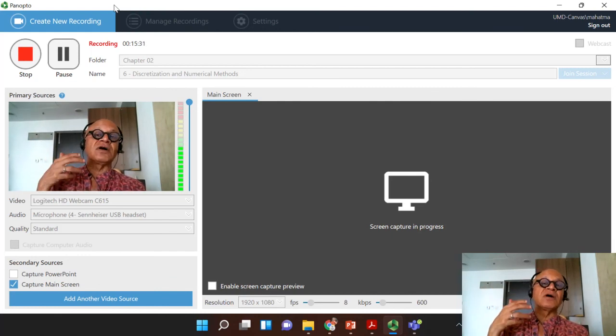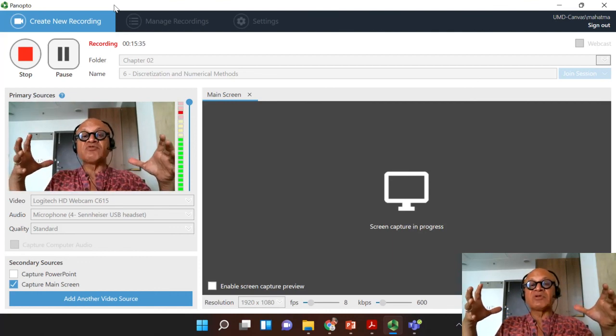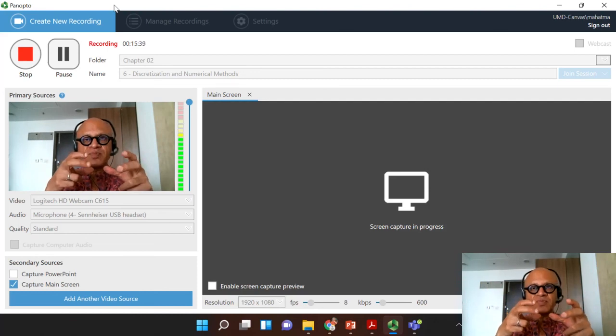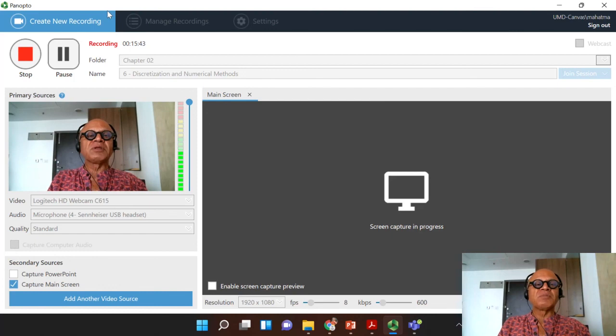which of course depends on how big the computer is, or how big the domain is. For example, we looked at an example of a regional model over Europe, as opposed to global model we use for doing climate predictions and climate projections, and so on and so forth. So all these are numerical issues one has to worry about.